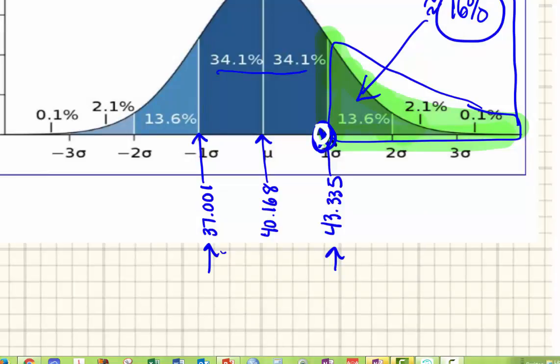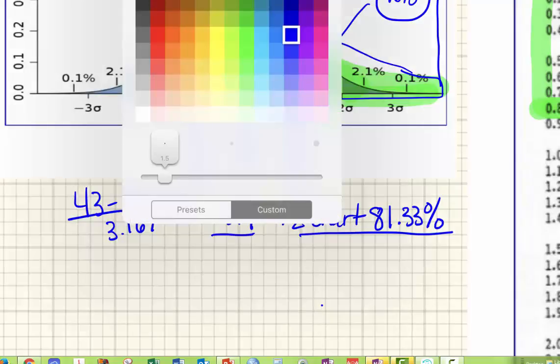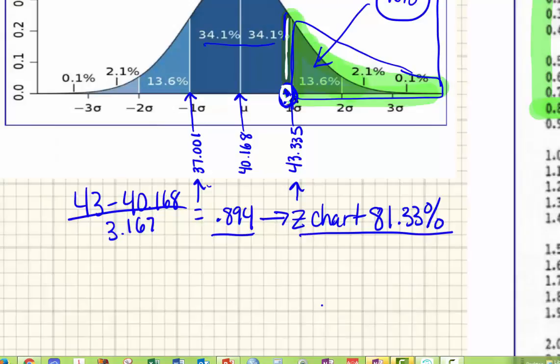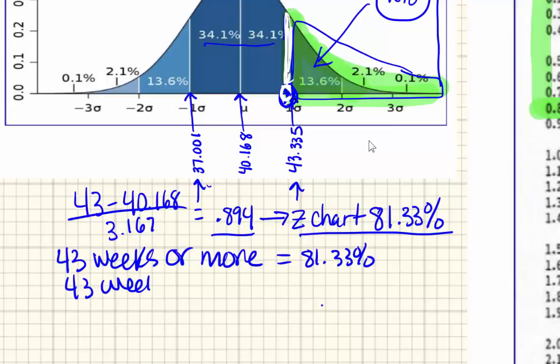So we do our calculation and we get this 0.894. That's the number we looked up on the Z-chart. We look it up and we get this 81.33%. So if we were right on the line here, right at one standard deviation, we would say about 84%. But since we're just shifted to the left, because this is so much of the curve here, it drops it all the way down to 81. So if the question was 43 weeks or more, the answer would be 81.33%. Since we're asking for 43 weeks or less, the answer is 1 minus 0.8133, which equals right about 19%.